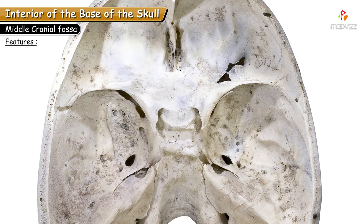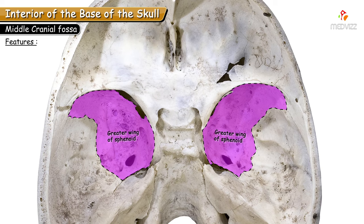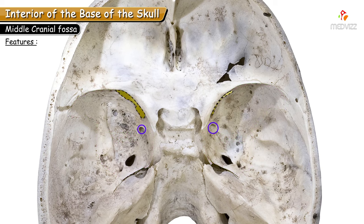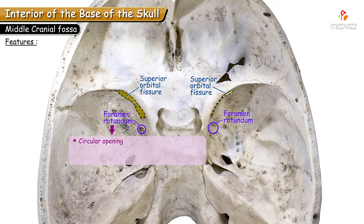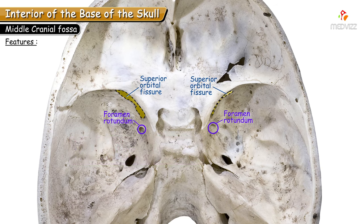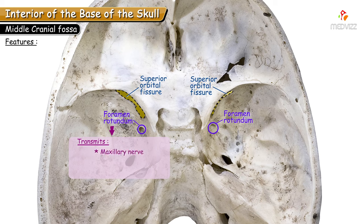In the greater wing of sphenoid, the first foramen just below the superior orbital fissure is the foramen rotundum — rotundum meaning round. This circular foramen is oriented anteriorly towards the pterygopalatine fossa, which is the fossa between the maxilla, pterygoid plates, and palatine bone. It transmits the maxillary nerve, which, after crossing the foramen rotundum, dilates to form the pterygopalatine ganglion.